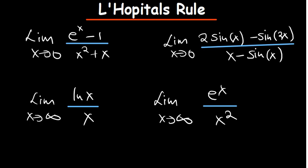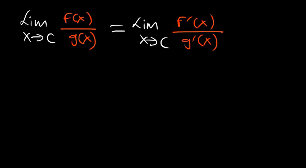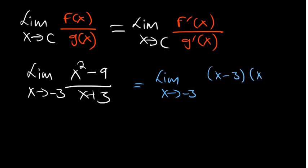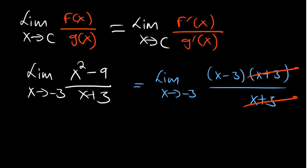Let me give you a few examples. Consider the limit as X approaches negative 3 of (X² - 9) over (X + 3). You can't substitute directly because you get zero on the bottom. L'Hôpital's Rule applies to indeterminate forms. We expand the top using difference of two squares: (X - 3)(X + 3), the (X + 3) cancels, and plugging in gives negative 6.